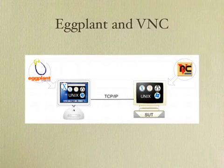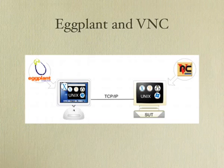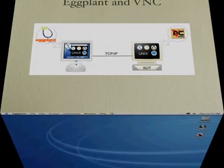Eggplant controls another computer through an open-source remote control system called VNC. A VNC server running on the system under test allows Eggplant to see the screen of the other computer and to control its keyboard and mouse. This allows Eggplant scripts to recognize objects appearing on the remote screen and to perform any actions in response, such as clicking on a button or entering text in a field.